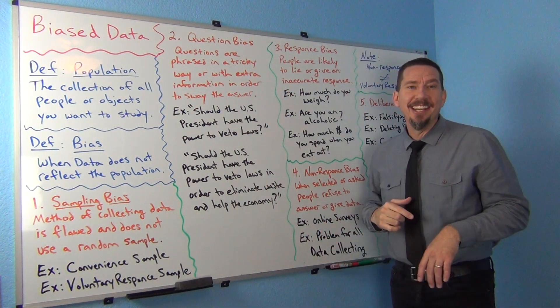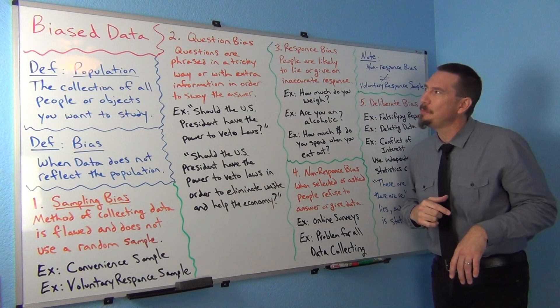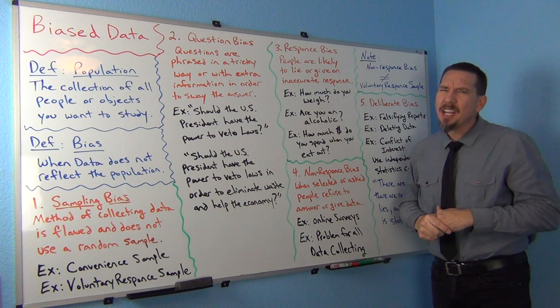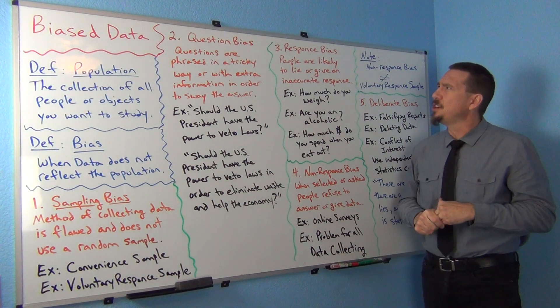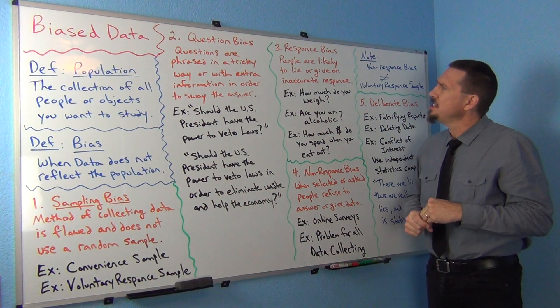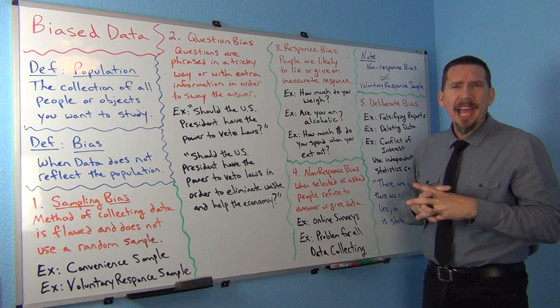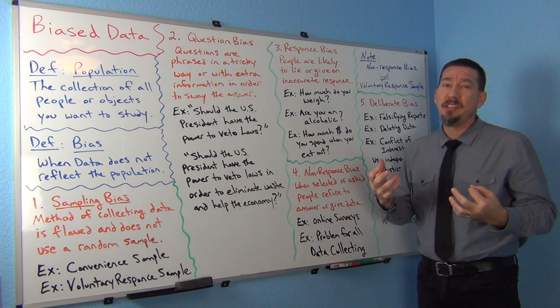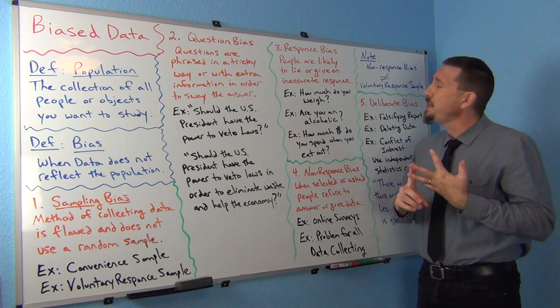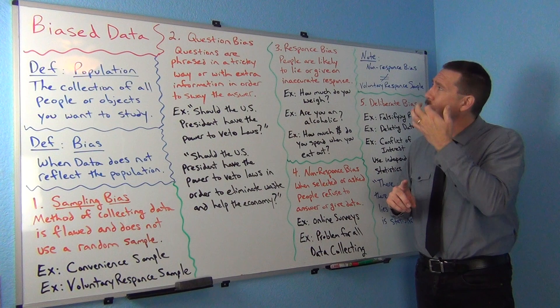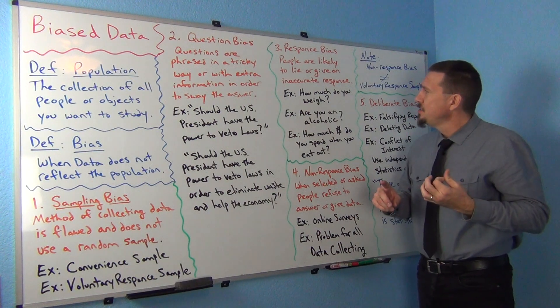Let's look at another one. Here's number three. Another type of bias, response bias. So response bias is one of those ones that's difficult. Now we're getting into more of things that we need to sort of think about a little bit. This is where you're asking a question that people are likely to either lie about or not be able to give you an accurate response. So for example, if I go around asking people how much they weigh.